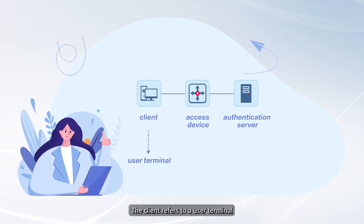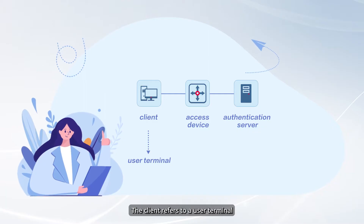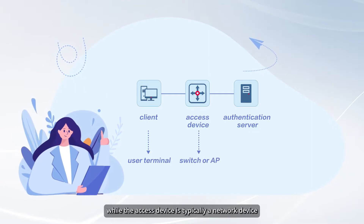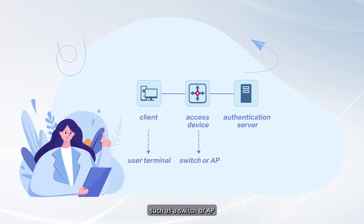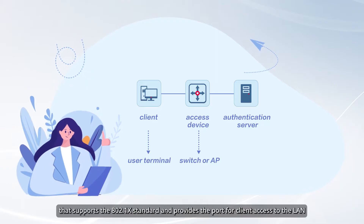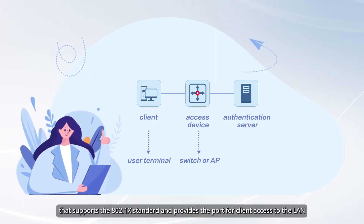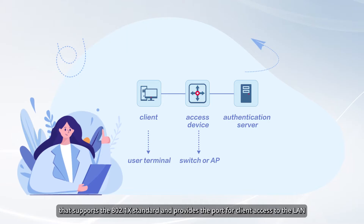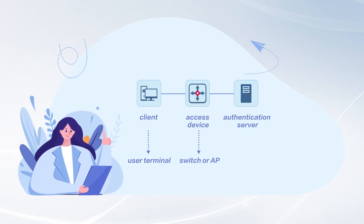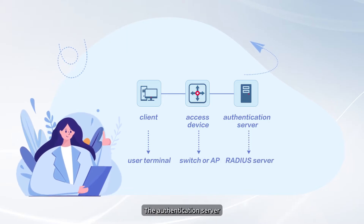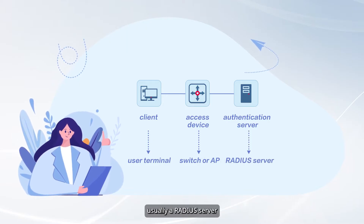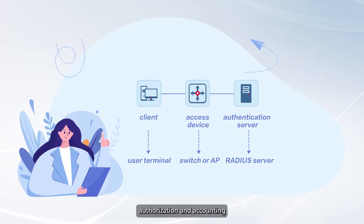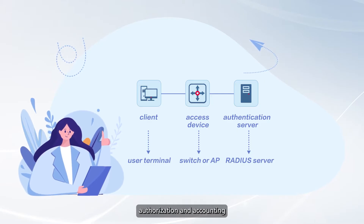The client refers to a user terminal, while the access device is typically a network device such as a switch or AP that supports the 802.1x standard and provides the port for client access to the LAN. The authentication server, usually a RADIUS server, conducts user authentication, authorization, and accounting.